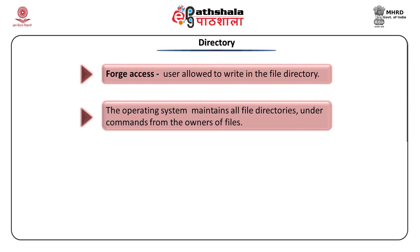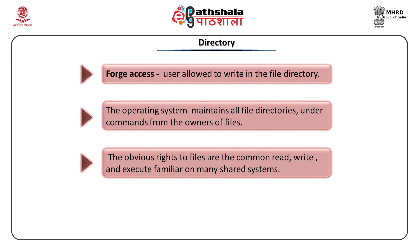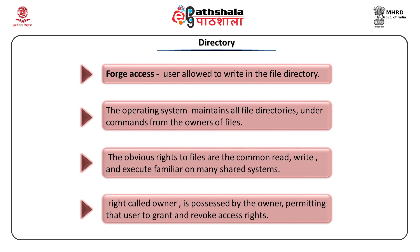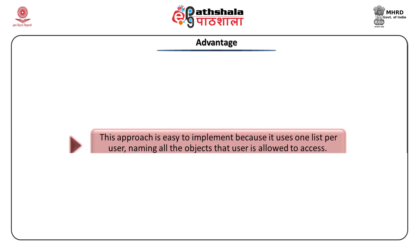The operating system maintains all file directories under commands from the owners of the file. The obvious rights of files are read, write, and execute. Another right, owner, is possessed by the owner, permitting a user to grant and revoke access rights — meaning the owner can give access rights to other users or take them away. The advantage of this approach is that it is easy to implement because it uses one list per user, naming all objects that a user is allowed to access.